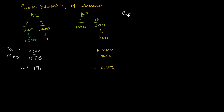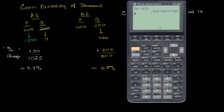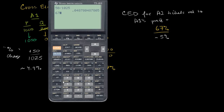So we now have the cross elasticity of demand for airline two's tickets relative to airline one's price. That's the percent change in the quantity demanded for airline two's tickets — 67% — divided by the percent change in airline one's price — roughly 5%. That's why we call it cross elasticity: we're going from one good to another.